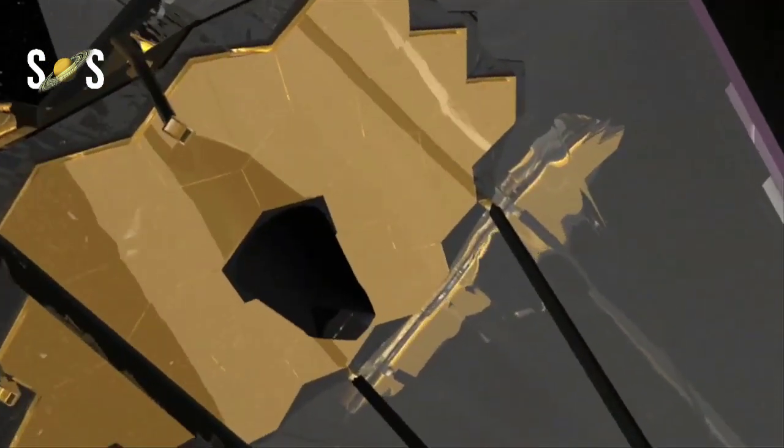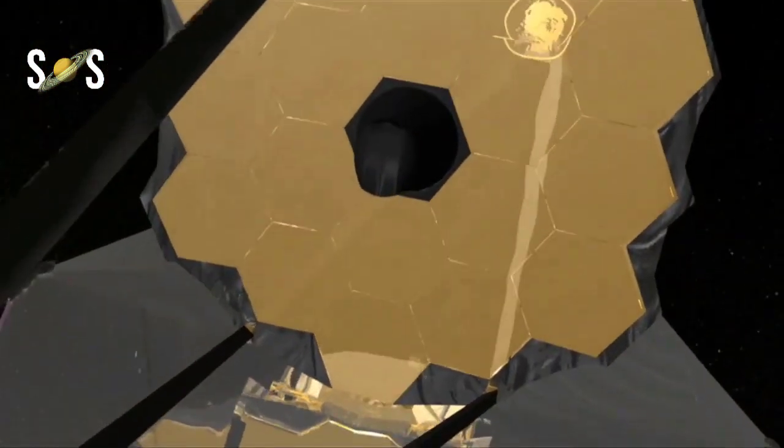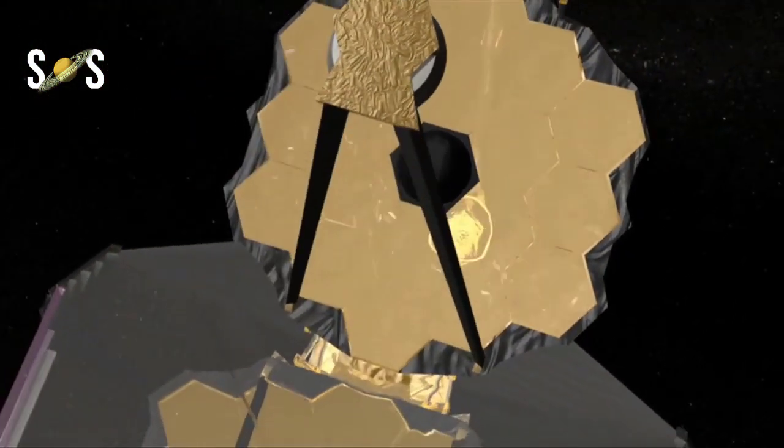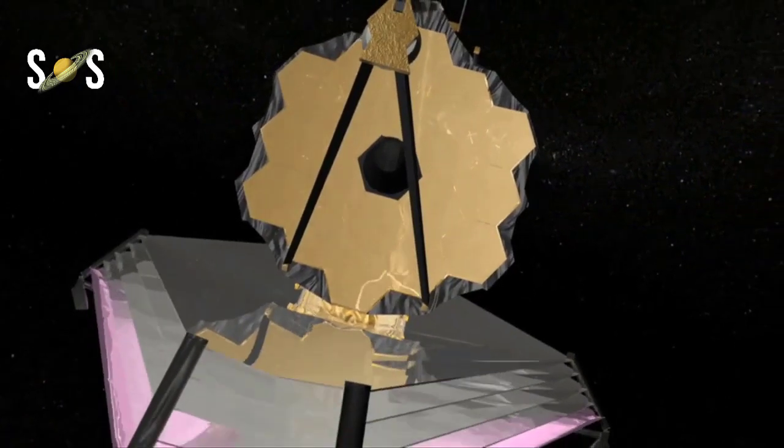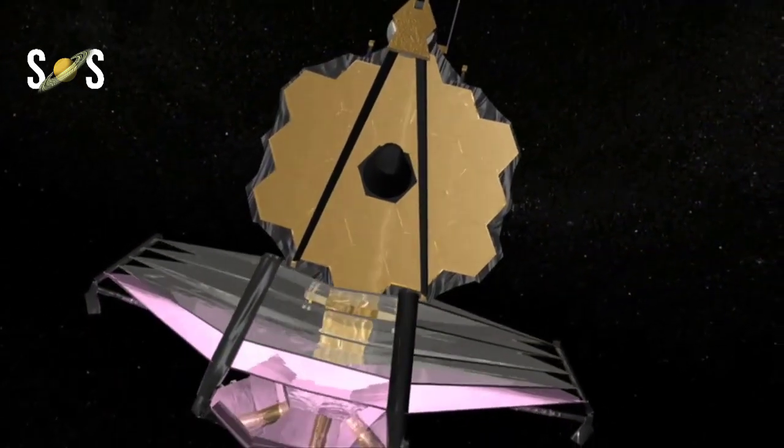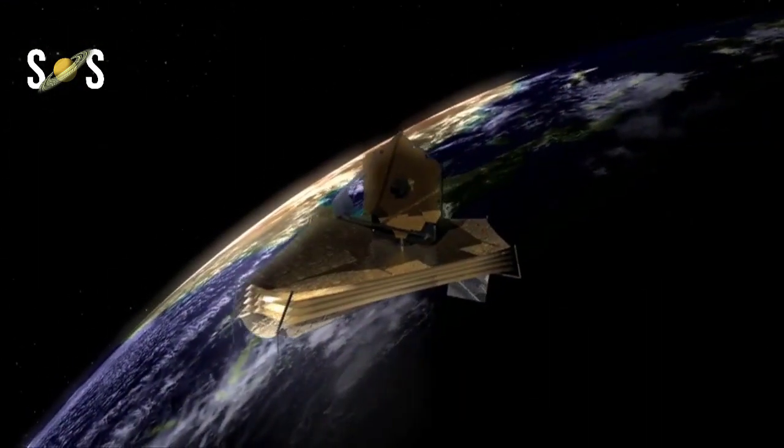Webb will have significantly larger field of view than the NICMOS camera on Hubble, covering more than 15 times the area, and significantly better spatial resolution than is available with the Infrared Spitzer Space Telescope.